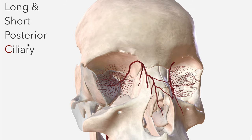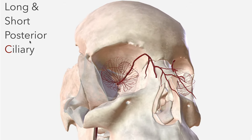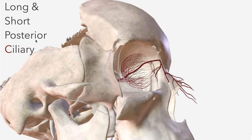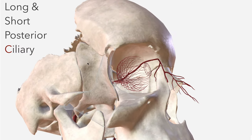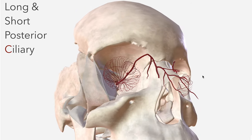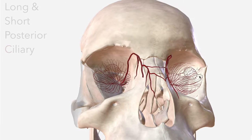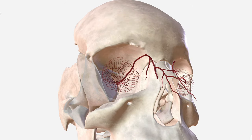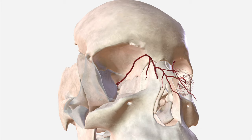The short posterior ciliary arteries are far more numerous and both contribute to the supply of the sclera, which they pierce at the posterior aspect of the globe. Let's remove these on the right-hand side to make things a little bit more straightforward as we bring in the rest of our branches.